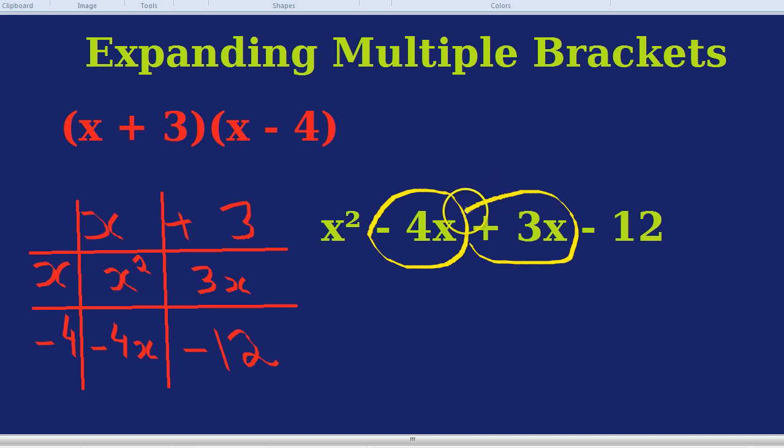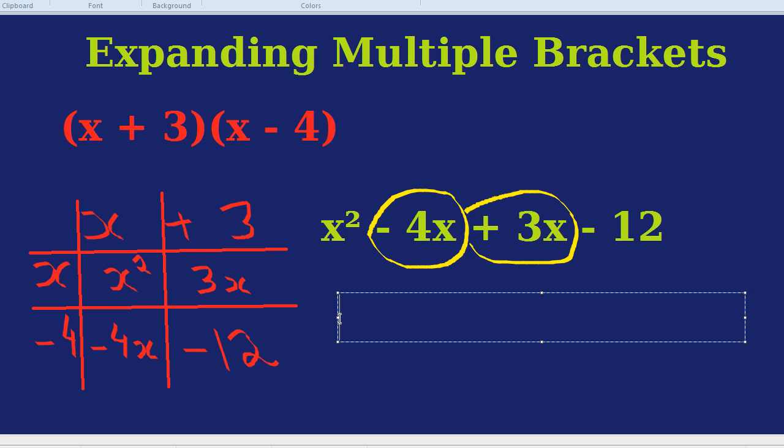You simply, what I would do, just to make it clear, circle them, and what is minus 4 of something? Add 3 of that something. Or if you like to think about it in terms of money, you're 4 in debt, and then someone gives you 3, what's your overall situation? You would be just 1 in debt, or minus 1. In other words, minus 4x plus 3x, you're just left with negative 1x. So the final answer would be x squared, take away x, take away 12.